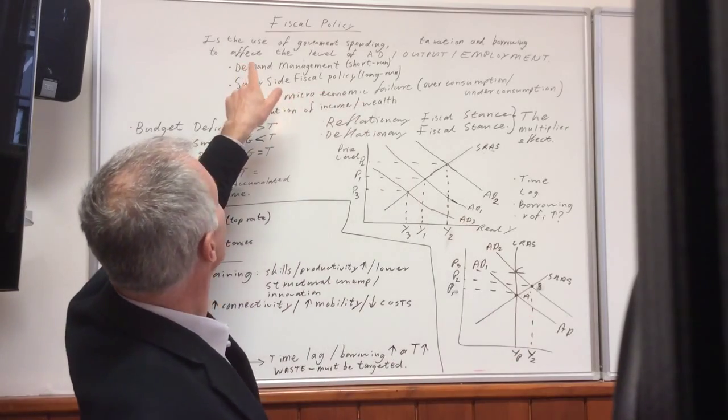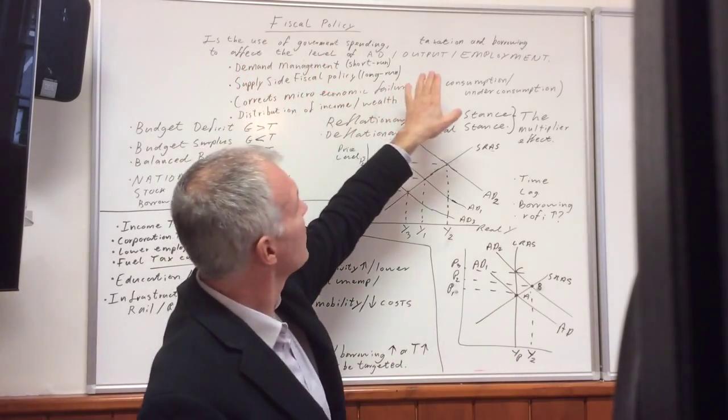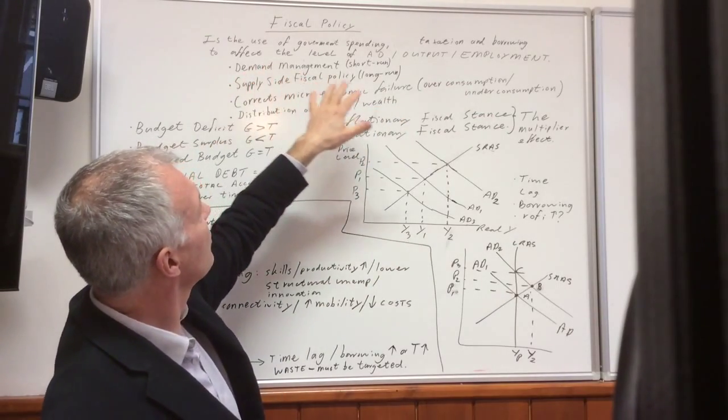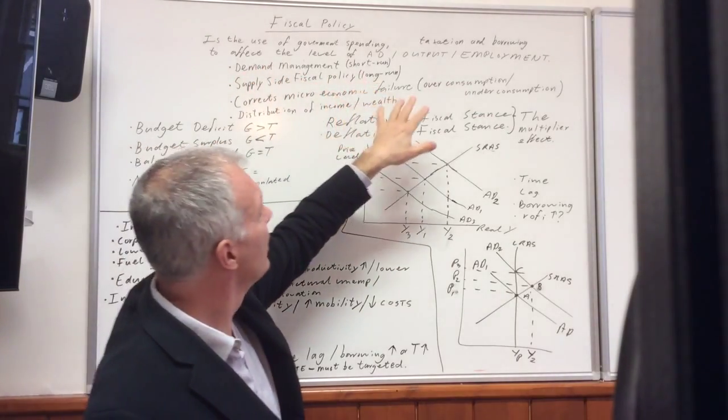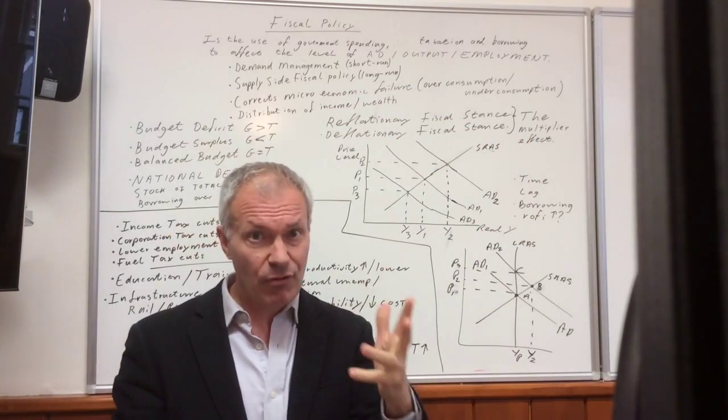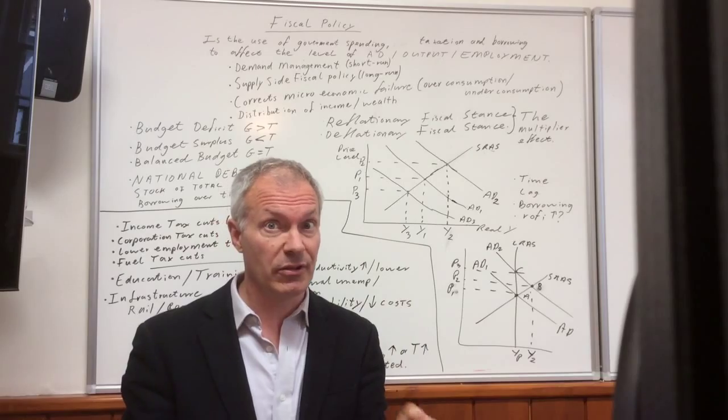What is Fiscal Policy? We have a definition here: basically it's the government spending, taxation and borrowing to affect or achieve a certain level of aggregate demand, output and employment. And indeed, there are really four facets to Fiscal Policy.